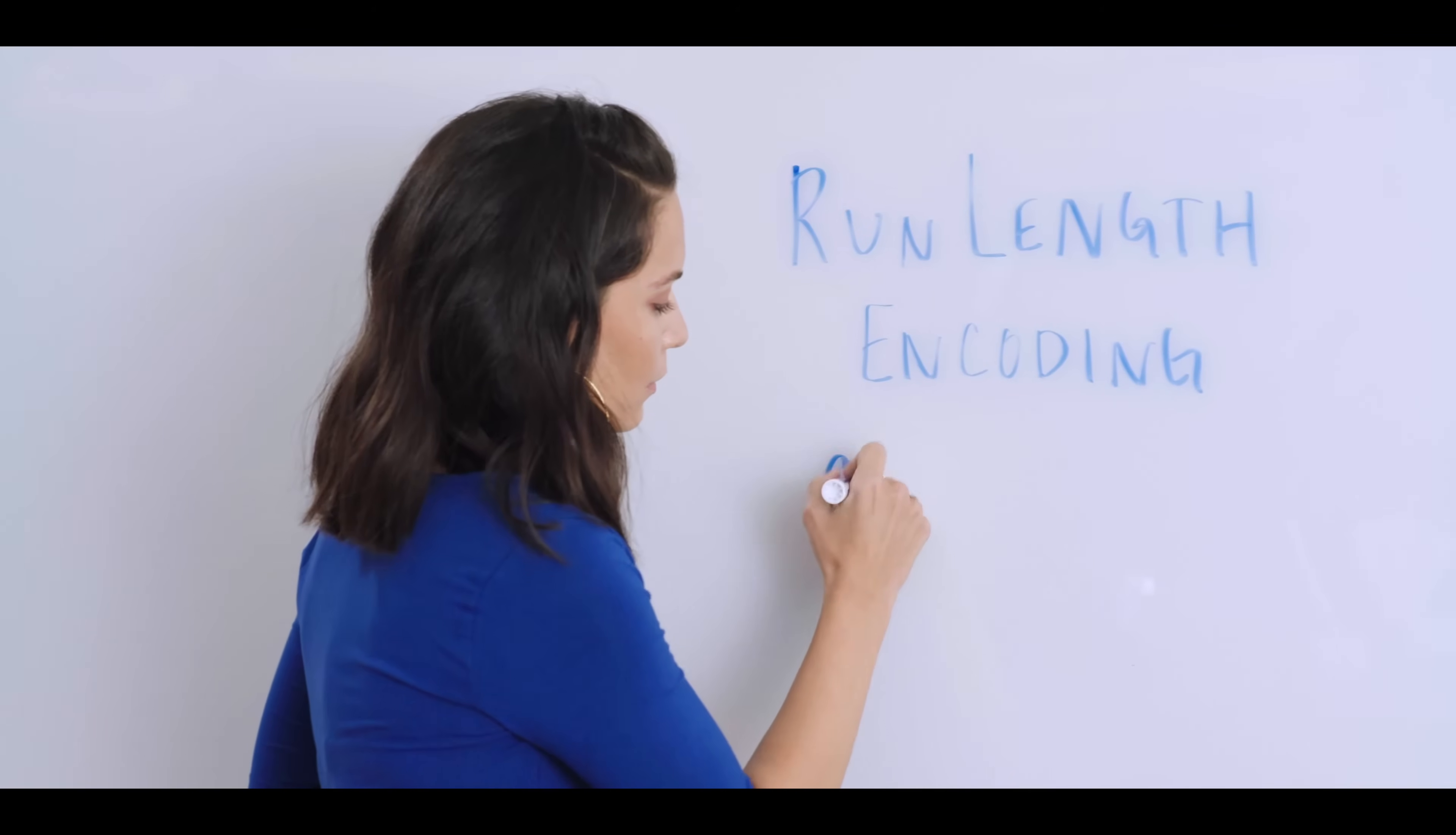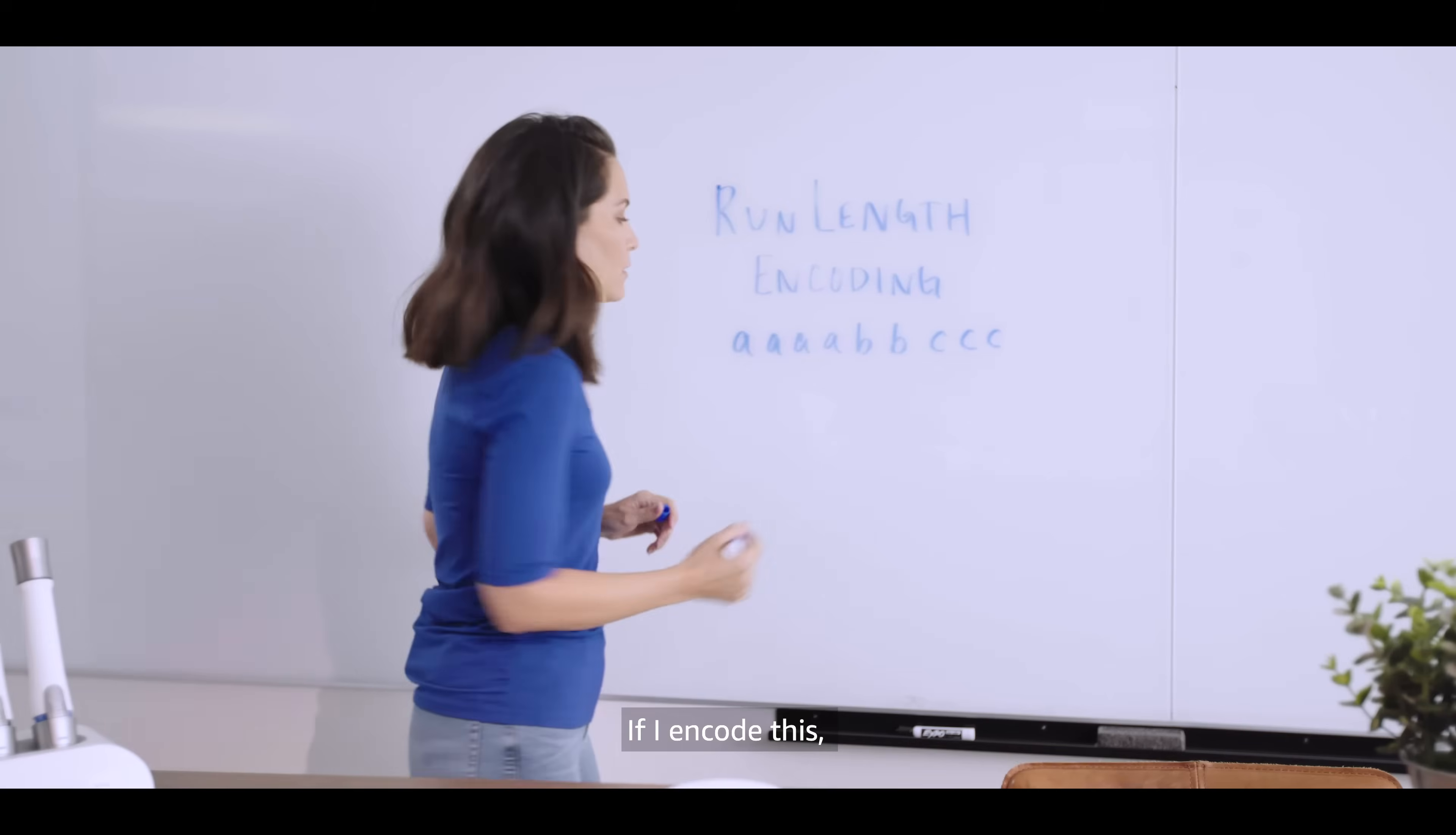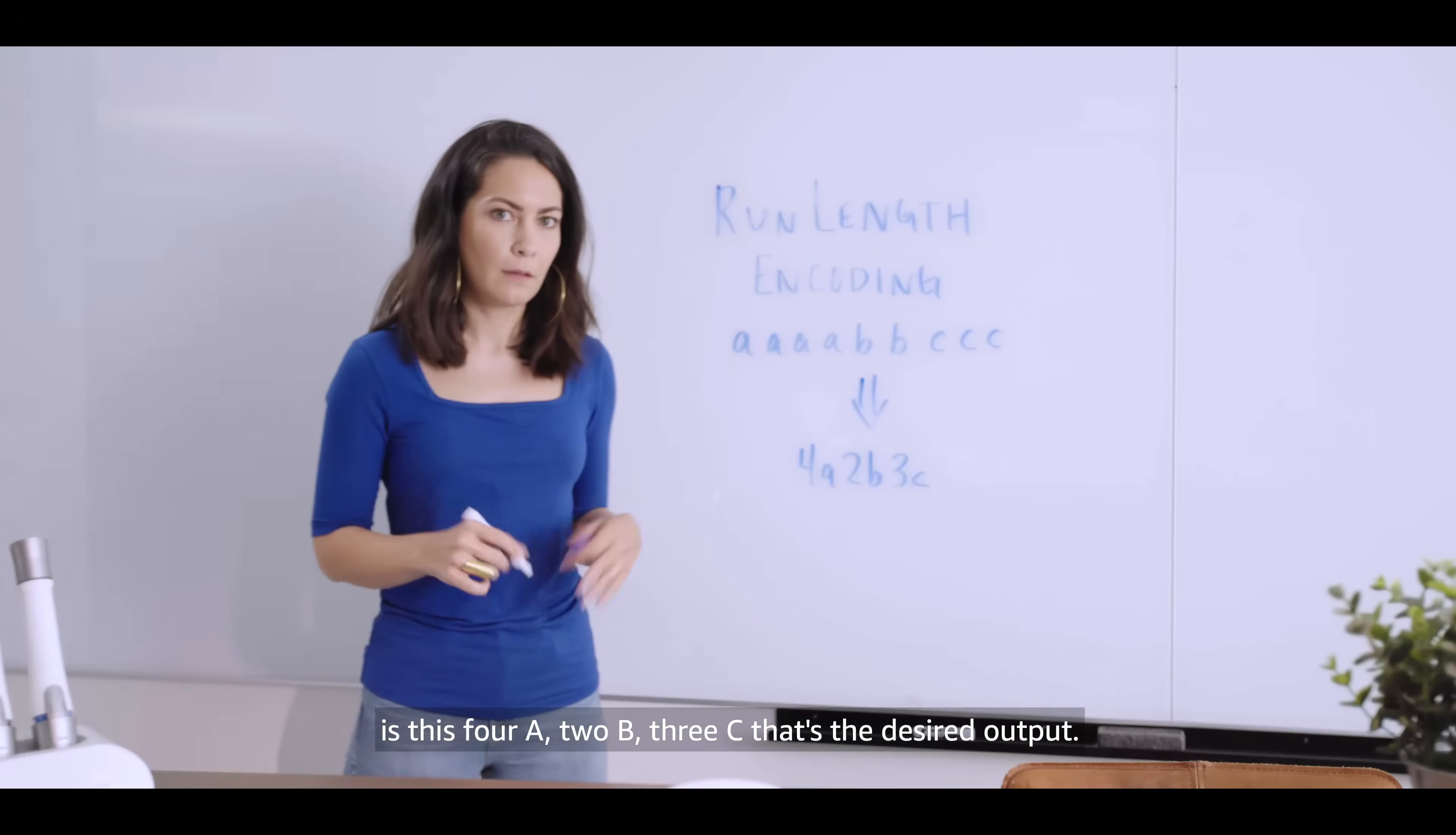What it looks like is this. So let's say I have a string of characters. A, A, A, A, B, B, C, C, C. If I encode this, what I should get is this. 4A, 2B, 3C. That's the desired output.